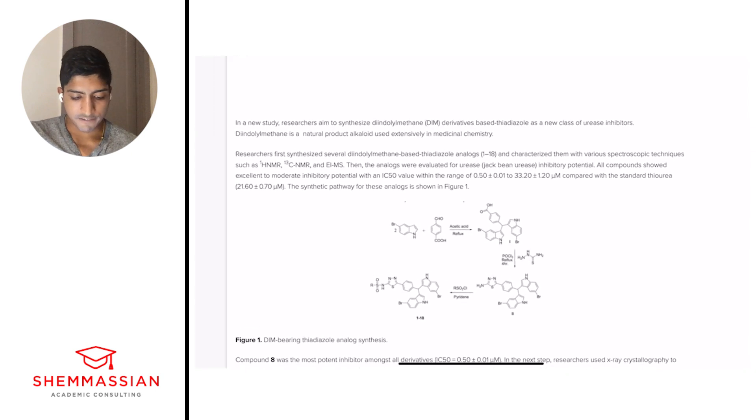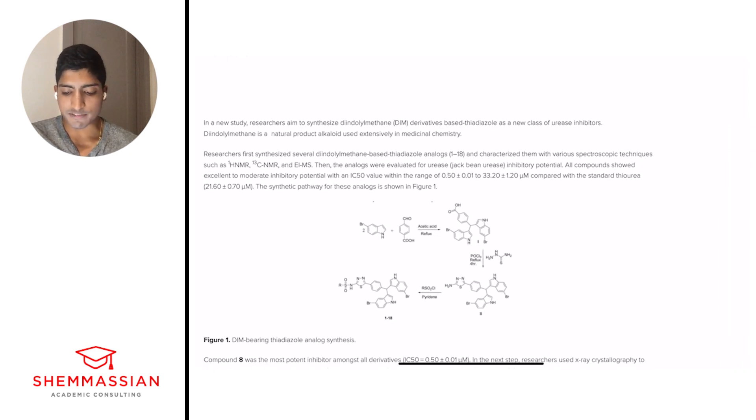So let's start with the first paragraph. In a new study, researchers aim to synthesize DIM derivatives-based thiadazole as a new class of urease inhibitors. DIM is a natural product alkaloid used extensively in medicinal chemistry. The question I always ask myself is, what's happening? Don't get bogged down in the details, just focus on a broad big picture understanding. So for me, I'm going to write DIM equals urease inhibitor. And you'll note that I use abbreviation symbols. It doesn't need to make sense to anyone other than yourself. All it's got to do is make sense to you and be quick.